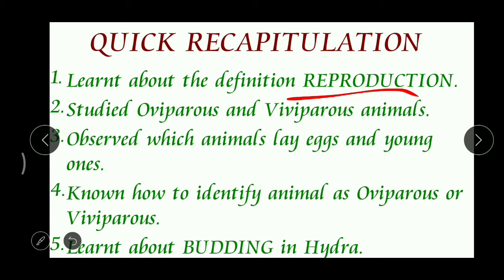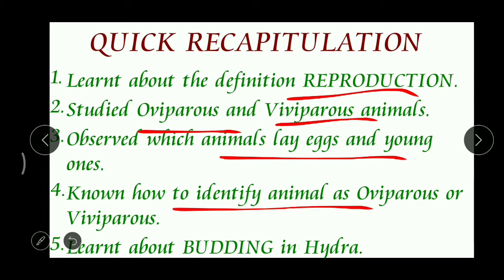We also studied about oviparous and viviparous animals. Oviparous means egg-laying animals, and viviparous means animals which give birth to young ones directly without any eggs. We studied examples for oviparous and viviparous animals, and how to identify them by observing two characters: the presence of external ears and epidermal hair. If these two characters are present, we call that animal viviparous, and if absent, oviparous.